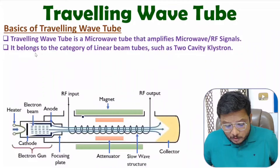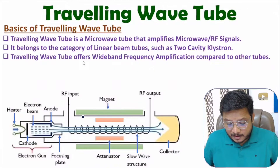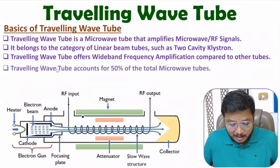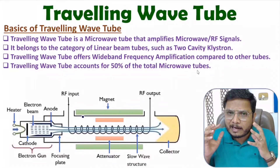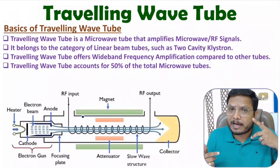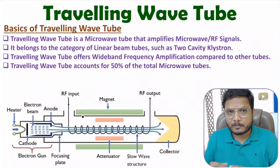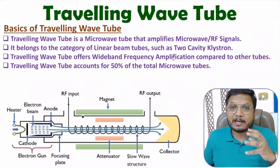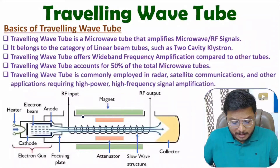Traveling wave tube belongs to the category of linear beam tubes like the two-cavity klystron. It offers wide bandwidth frequency amplification compared to other tubes, which is why it accounts for more than 50% of total microwave tubes. It also has a very low noise figure, and is commonly used in radar and satellite communication.